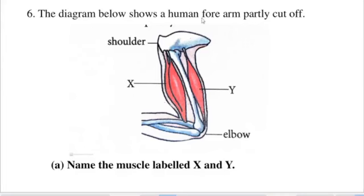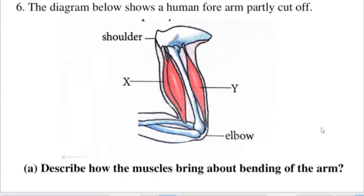The next question shows a diagram of a human forearm with the shoulder, muscle X, muscle Y, and the elbow labeled. Question A: Name the muscles labeled X and Y. Question B: Describe how the muscles bring about bending of the arm.